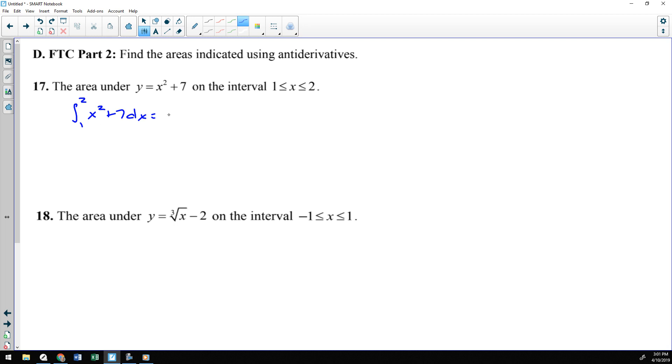And then, to solve that, we do the antiderivative first. So, the antiderivative of x squared plus seven is x cubed over three. The antiderivative of seven is seven x, and we don't need the plus c because this is a definite integral.